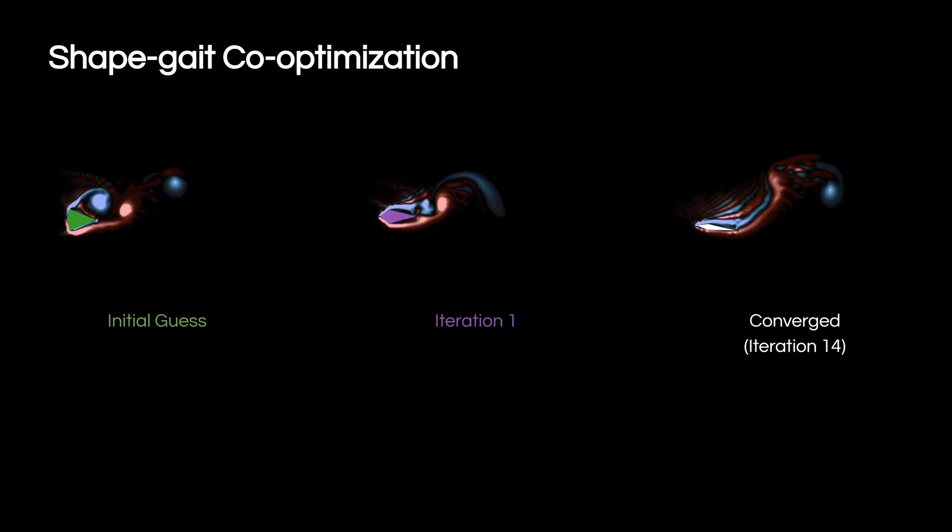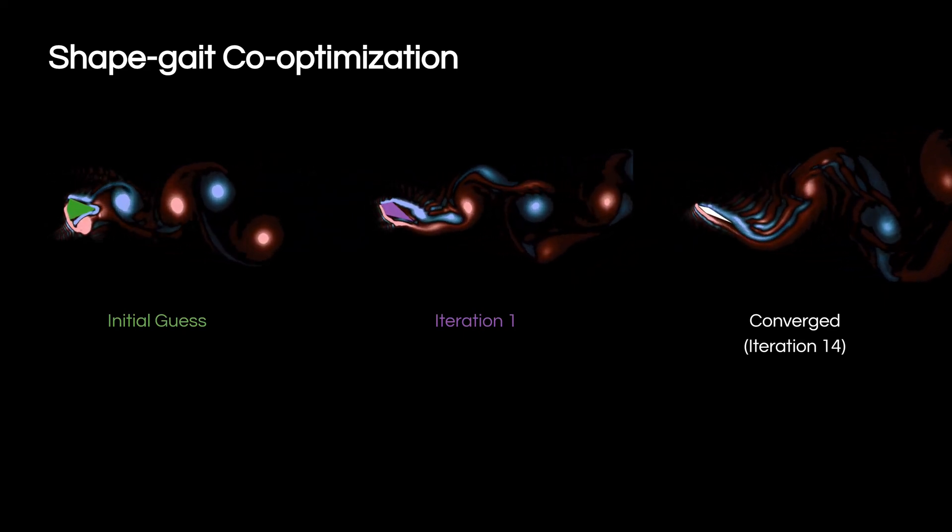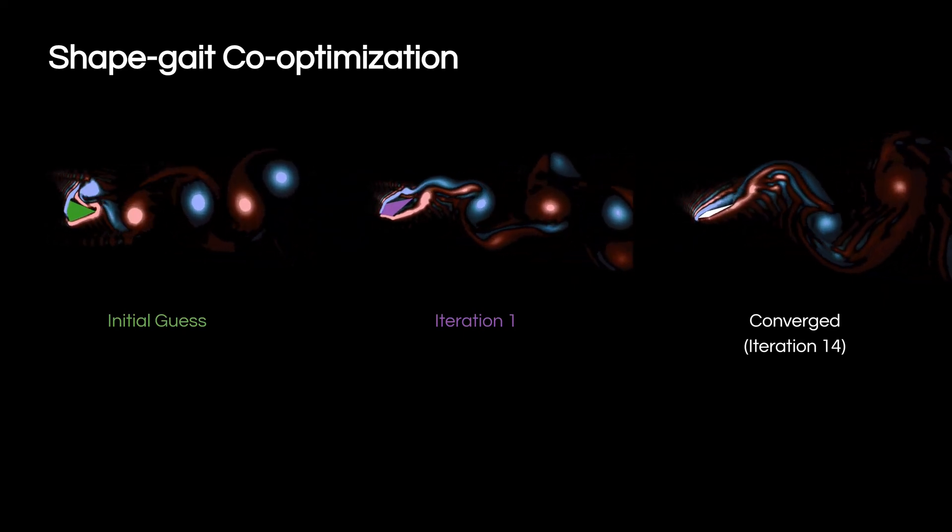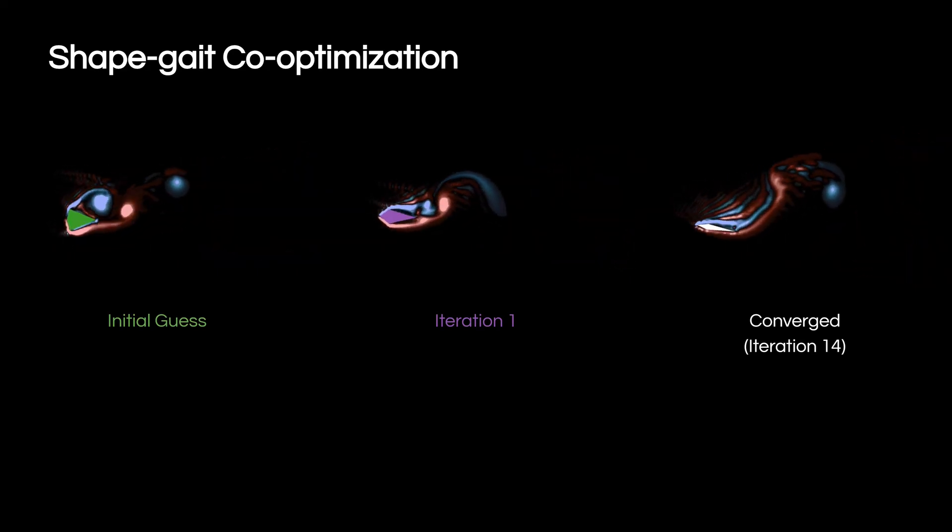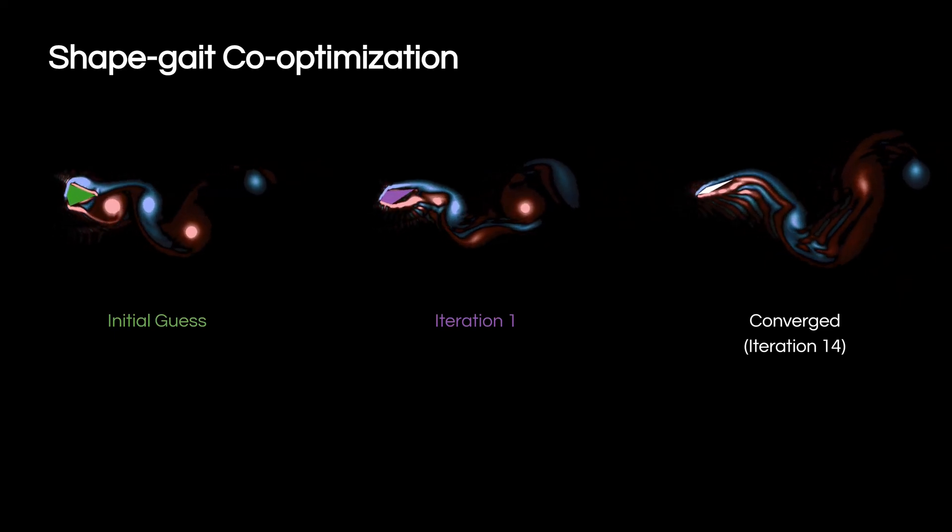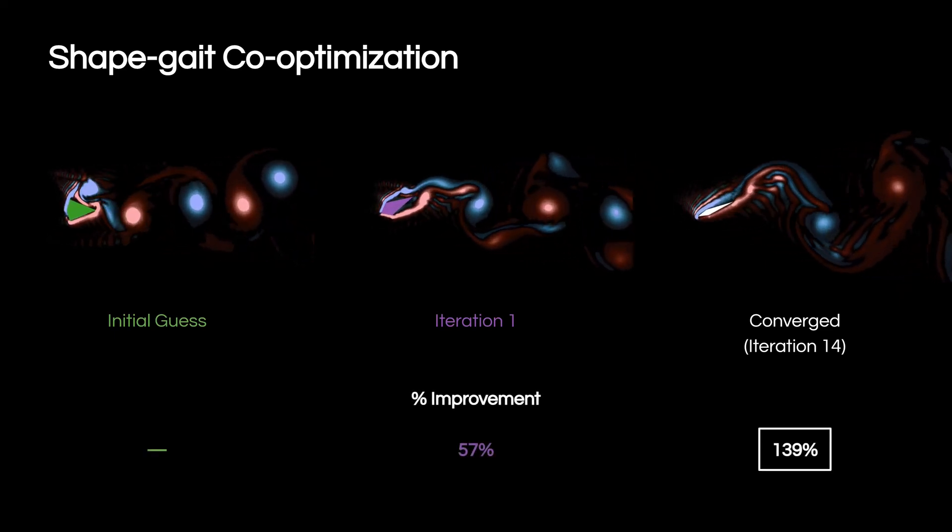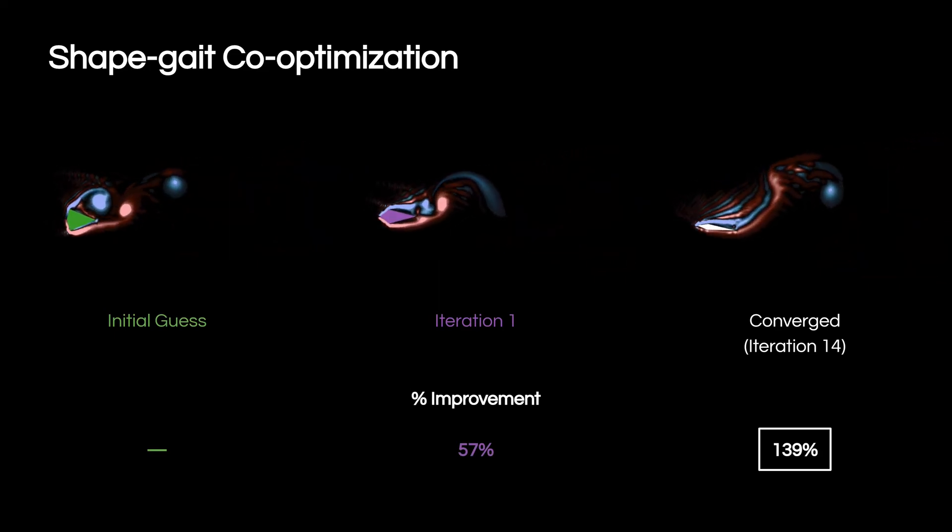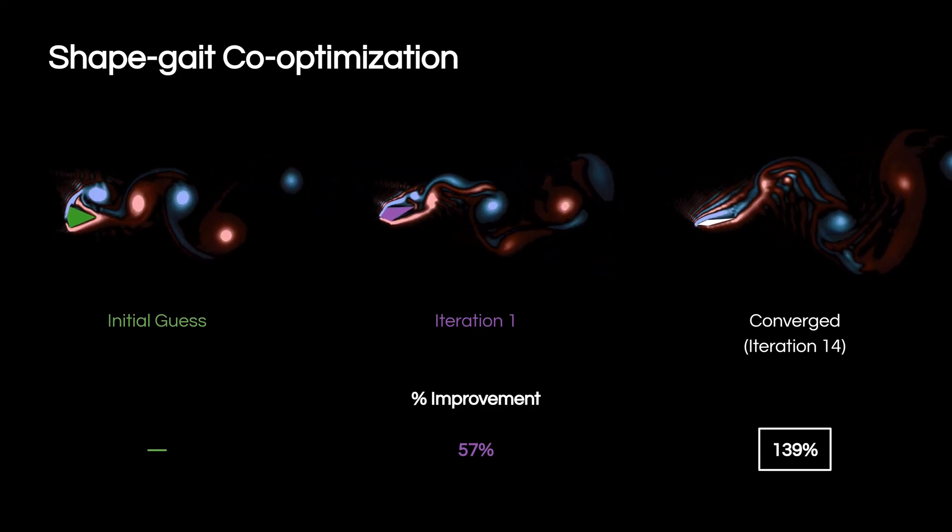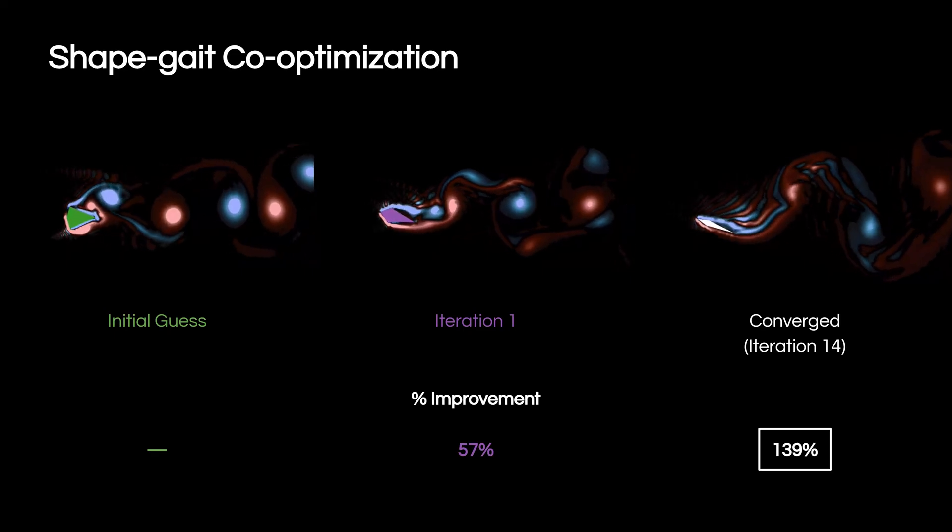we perform shape and gait co-optimization of an oscillating diamond foil using the gradient-based BFGS algorithm. Specifically, we aim to maximize the thrust by adjusting the foil thickness, heave, pitch, and relative heave-to-pitch phase. Doing so results in a thrust-generating converged solution from a drag-inducing initial guess, achieving a 139% improvement in thrust in only 14 BFGS iterations, showcasing the impact of Aquarium's full differentiability.